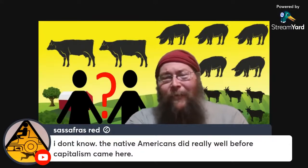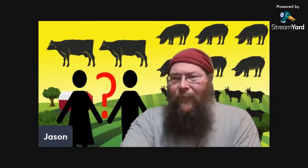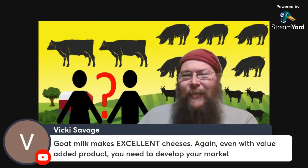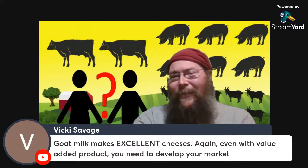The native Americans did really well before capitalism came. Well, the native Americans had a form of capitalism as well — they were engaging in trade. They did have a different system of morals and ethics though. Tribal morals and ethics state that whoever produces the most for the tribe has the greatest status, and you trade on status and social capital. There are many different types of capital, including social capital. And yes, goat milk makes excellent cheeses — but once again, if we don't have a market for them and can't get them to market, it ultimately didn't matter.